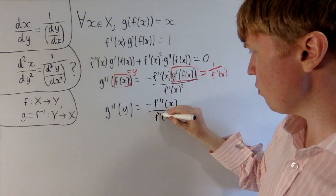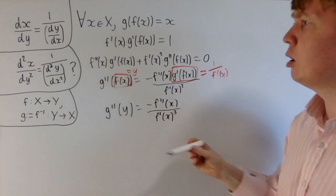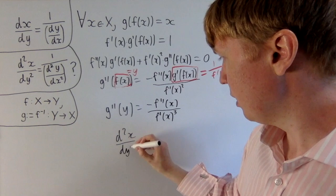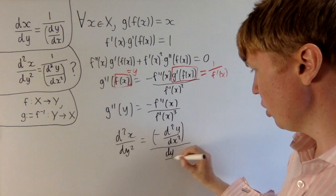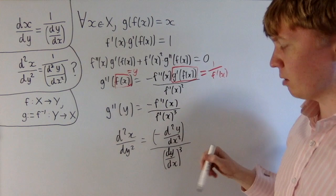But what we can also do is put this back into Leibniz notation and compare to what we thought it might have been. So we get d²x/dy². This is now equal to minus d²y/dx² divided by (dy/dx)³.